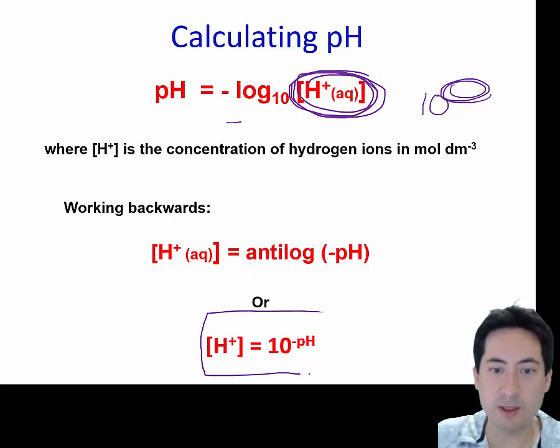I find this most useful. You've got the pH and you want to know the hydrogen ion concentration. Just plug it into your calculator: 10 to the negative whatever that pH value is.